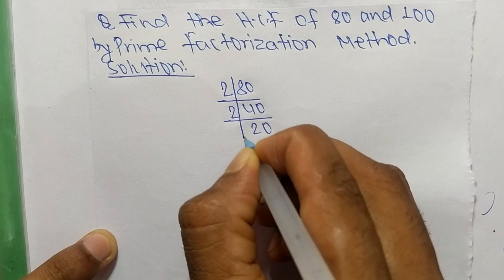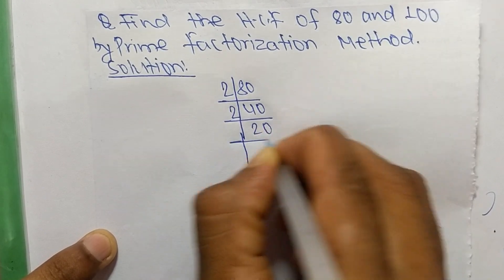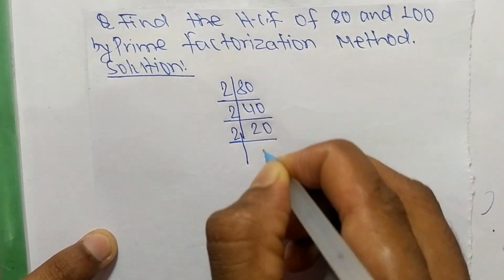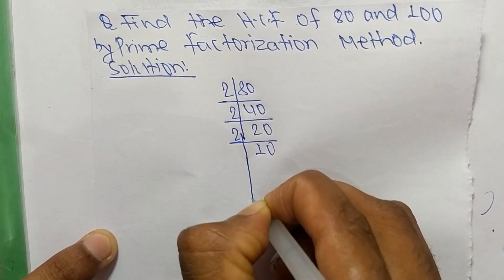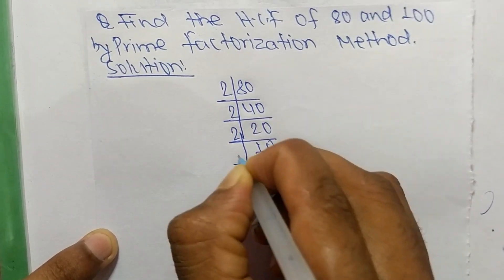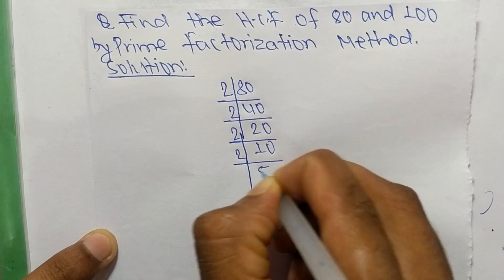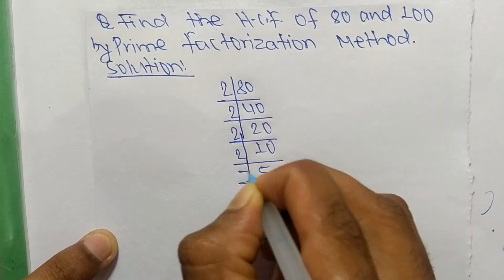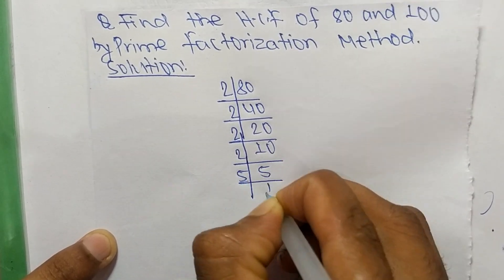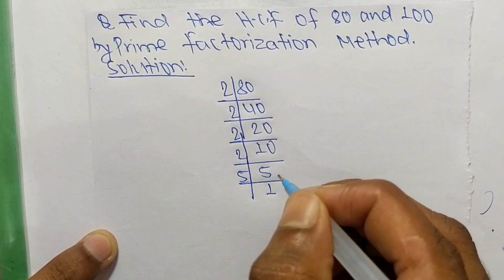2 times 10 makes 20, 2 times 5 makes 10, and 5 times 1 makes 5.